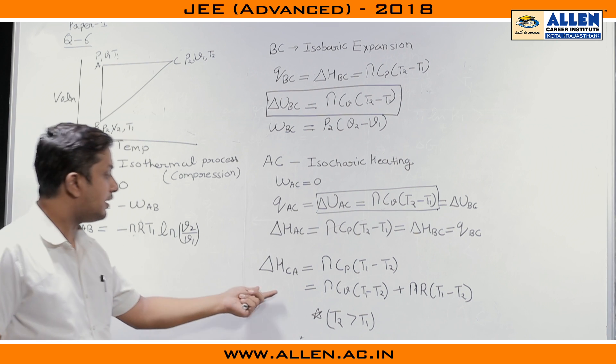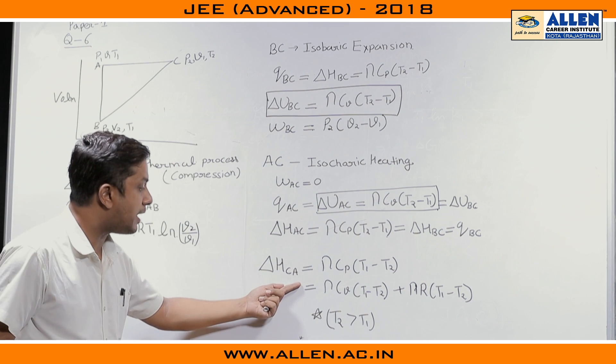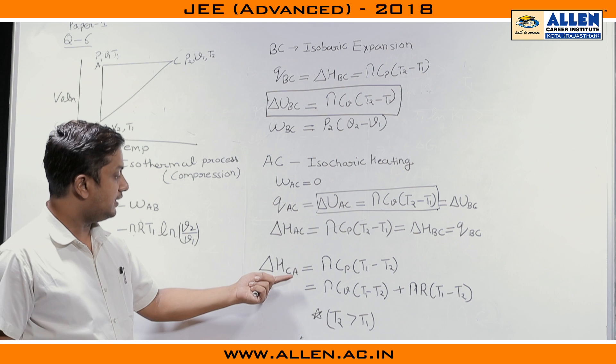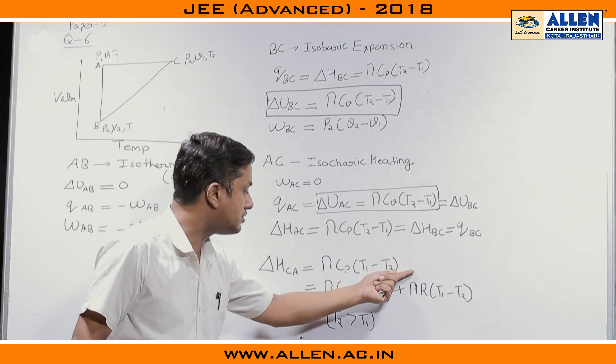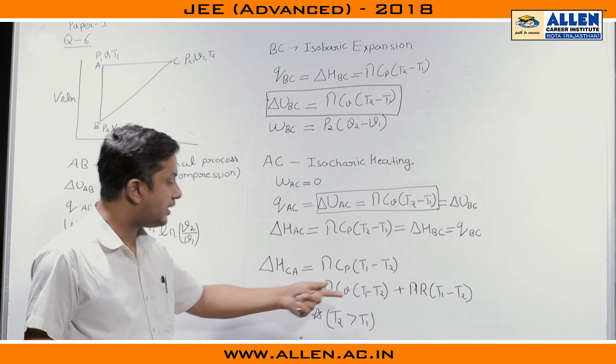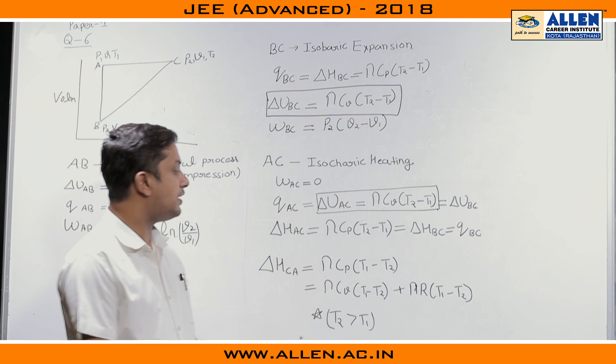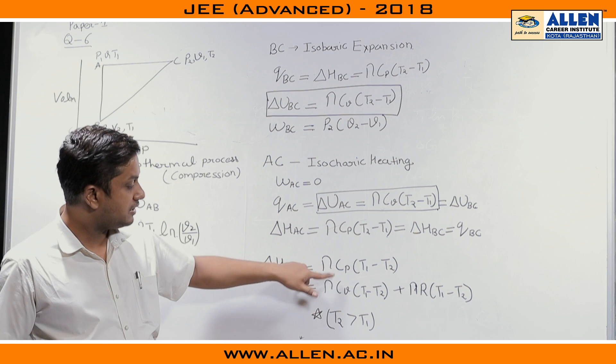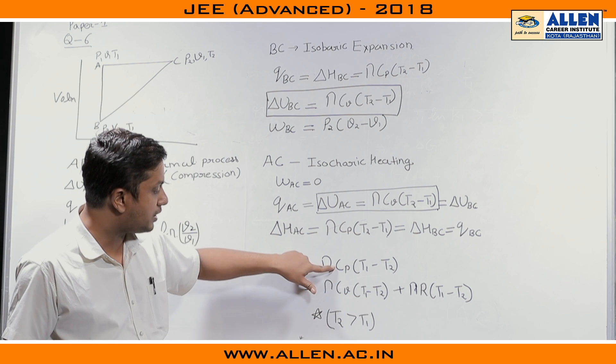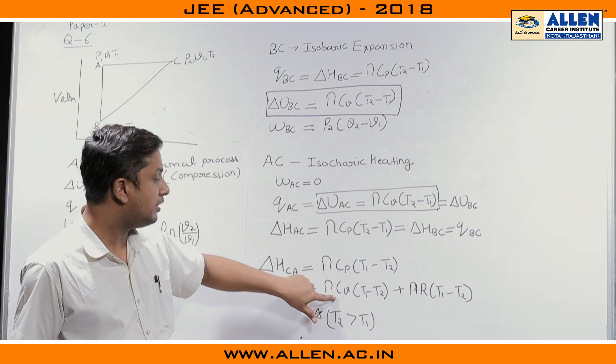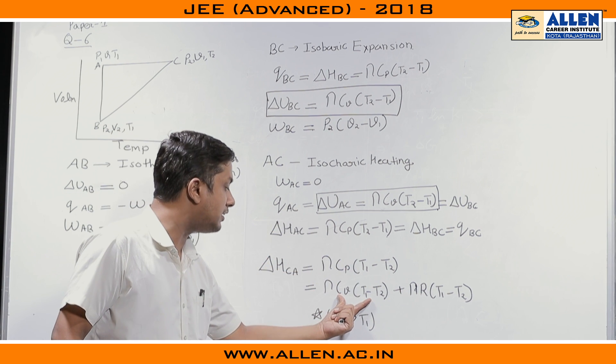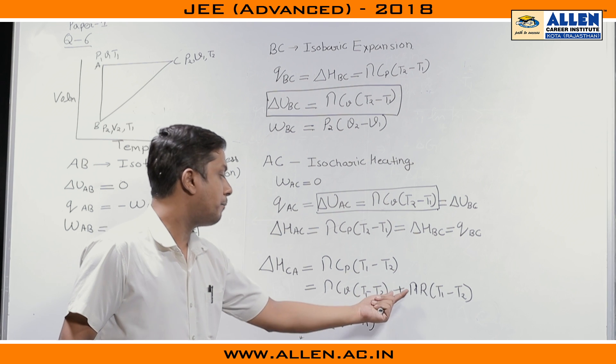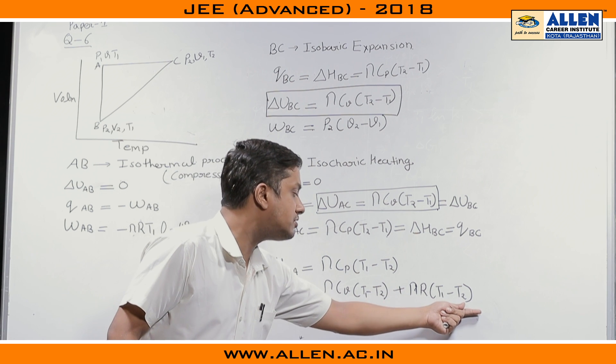Now, the last thing delta H_CA magnitude. Now, if we check then delta H_CA magnitude will be equal to nC_P(T₁ minus T₂). C_P can be written as what? C_P minus C_V is R. Now, once C_P minus C_V is R, C_P can be replaced by C_V plus R. Putting the values, we will get this. Now, this is my delta U_CA plus nR(T₁ minus T₂).